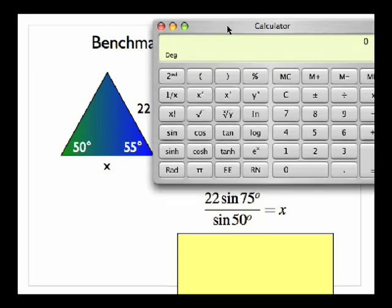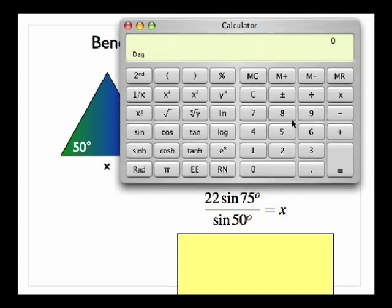I'm going to go ahead and bring in my calculator now and just punch that in. 22 times 75 sine divided by 50 sine equals 27.74.